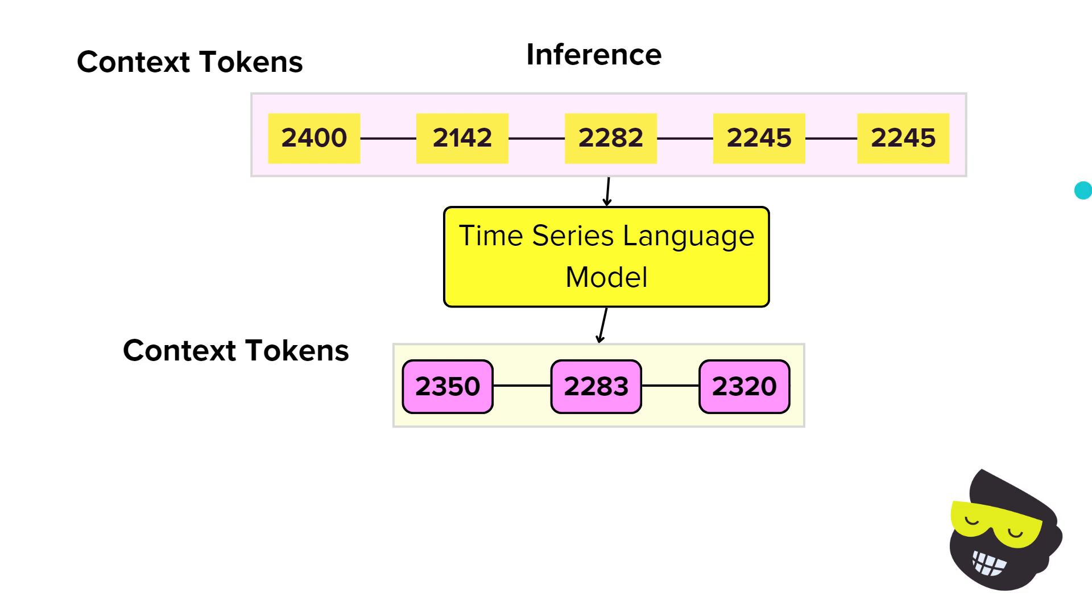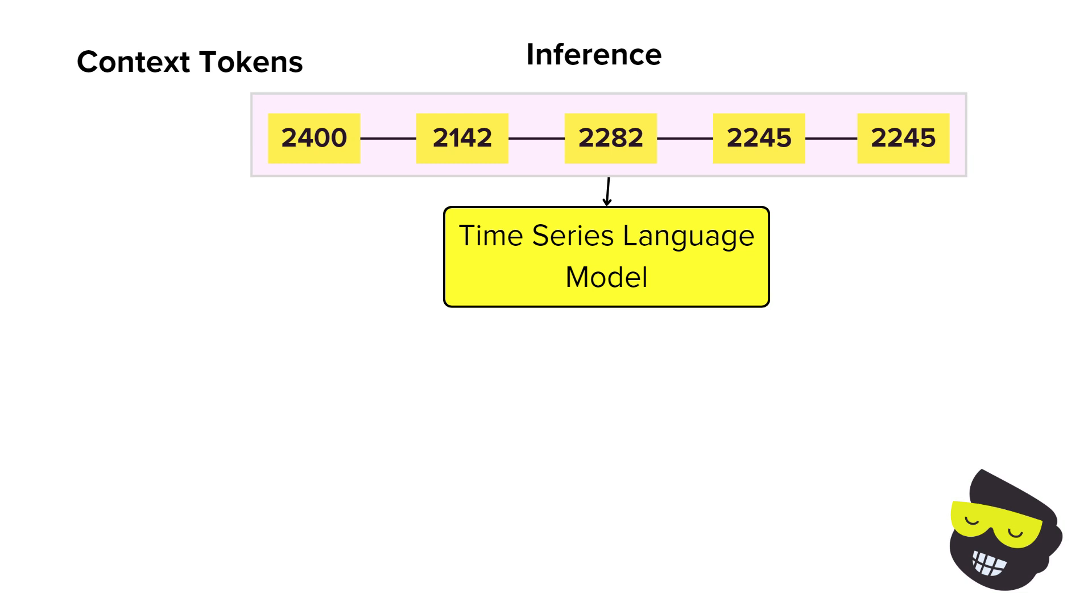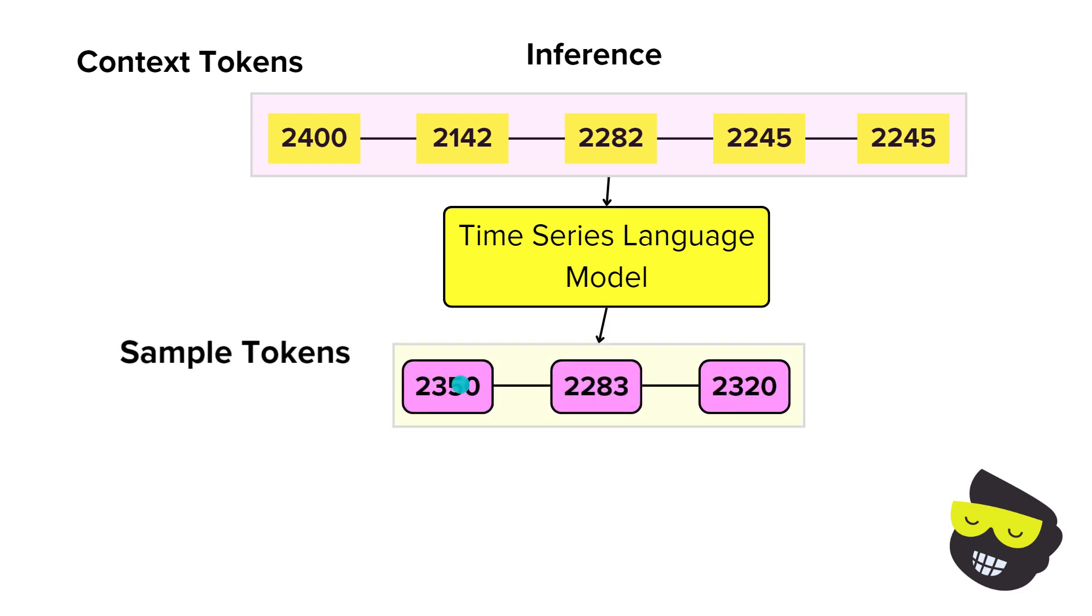For instance, if we have these context tokens, these would be the next context tokens. So the ones that would represent the future forecasts. So after the time series language model, then we get the sample tokens.